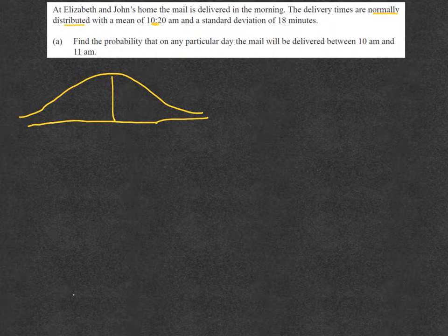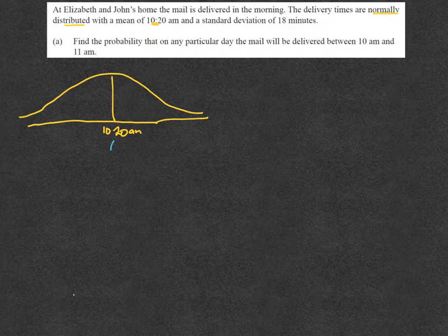So if our mean time is 10:20 AM, I suggest you set that to zero. Our mean is equal to zero and we'll make our standard deviation equal to 18, because dealing in time it's not a base 10 sort of scale, so it gets quite difficult.